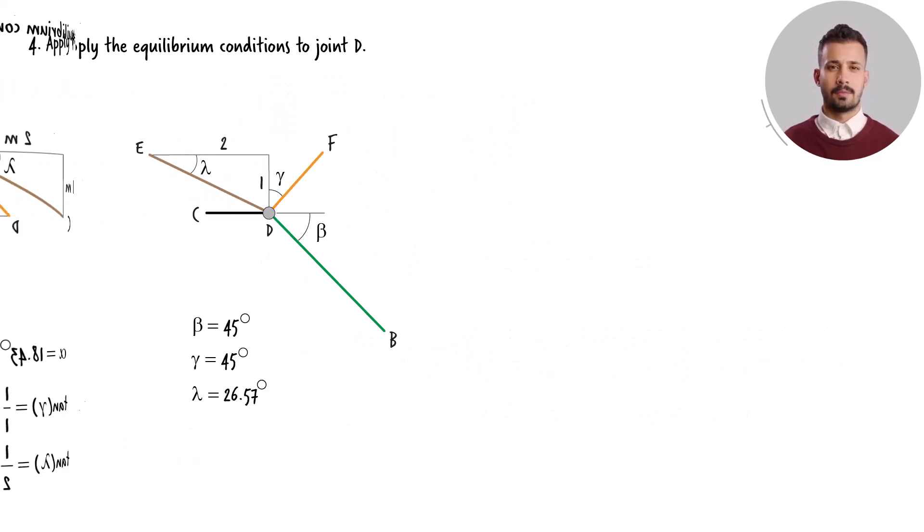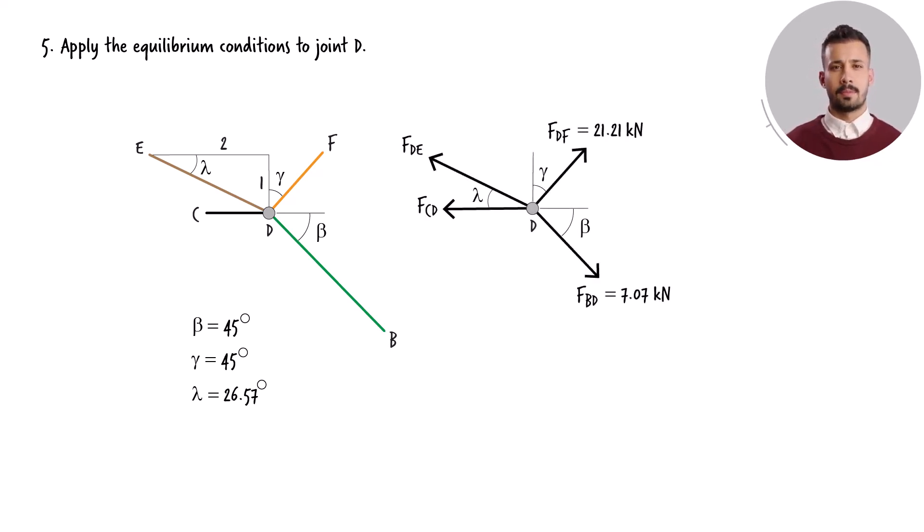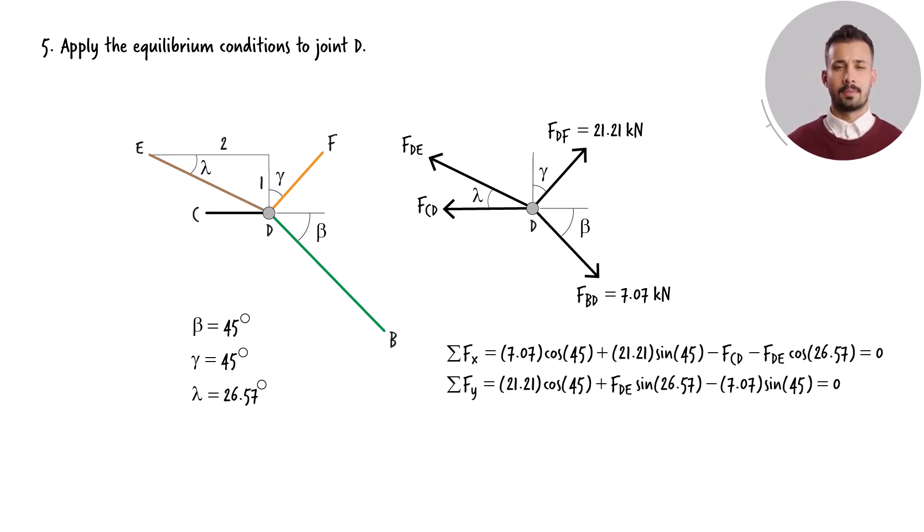Moving forward, let's focus on joint D. We've already determined the forces in members BD and DF. This allows us to determine the forces in the other two members by applying the joint equilibrium equations. Here is the joint free body diagram and here are the equilibrium equations. Solving these equations for the unknown forces, we get the results. Let's examine the outcomes of our analysis, taking into account the present symmetry.